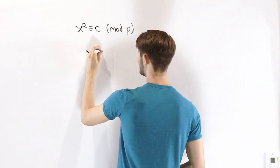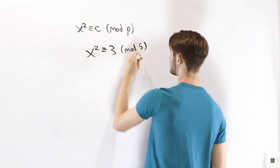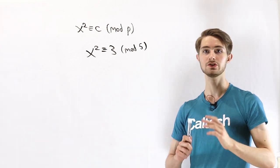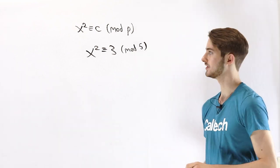For example, the congruence x squared is congruent to 3 mod 5 has no solutions. There is no integer x where when we square it, we get 3 mod 5.